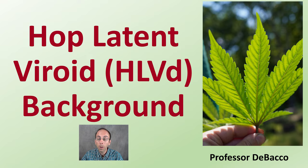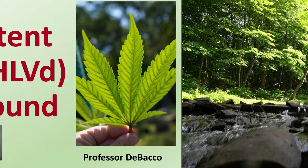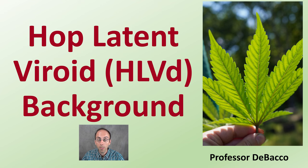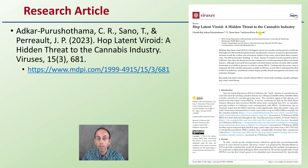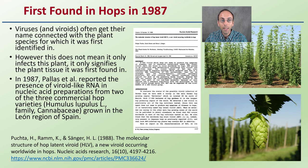Here I'm going to provide you some background. Let's learn more about this Hop Latent Viroid — where it came from and how it became established. There's a great research article: 'Hop Latent Viroid: A Hidden Threat to the Cannabis Industry,' which you can check along with references in the description. This viroid was first found in hops — that's actually where the name came from — Hop Latent Viroid, in 1987. Viruses and viroids often get their name connected with the plant species in which they were first identified. Hops is a close relative of cannabis; however, this does not mean it only infects that plant.